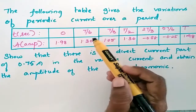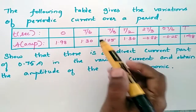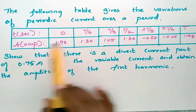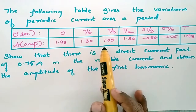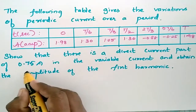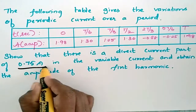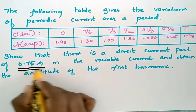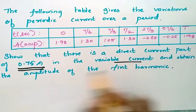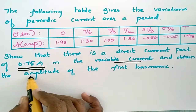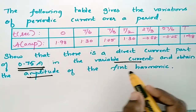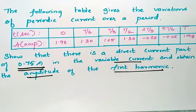The following table gives a variation of periodic current over a period. Show that there is a direct current part of 0.5 amperes in the variable current and obtain the amplitude of the first harmonic.